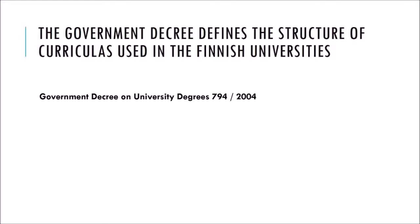The normative duration of studies for the bachelor's degree is usually three academic years and for the master's degree two academic years. In order to graduate within the normative time, the student should complete 60 credits per academic year. The workload required for one credit is 27 hours.